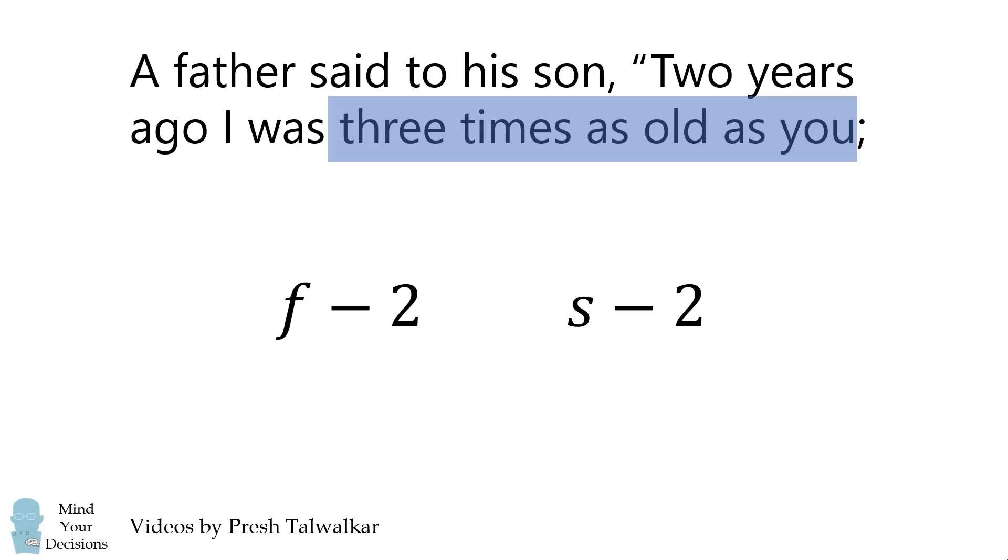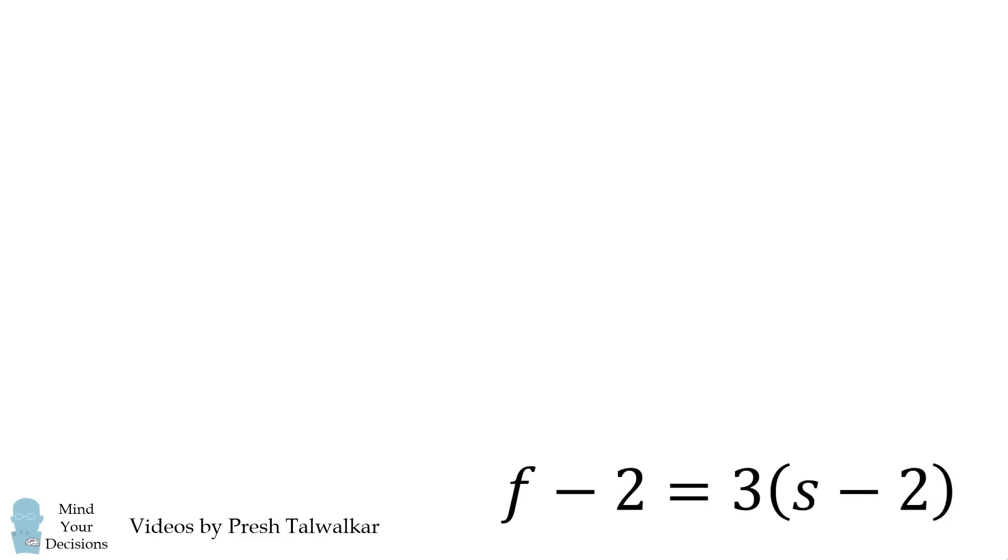At that time, the father would be three times as old as the son. So F-2 will be equal to 3 multiplied by the son's age at that time, which is S-2. We'll put this equation to the side.